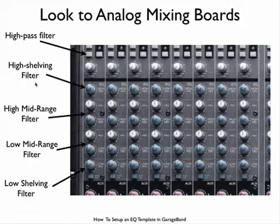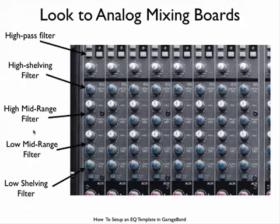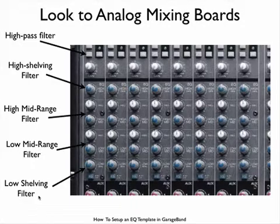Next, we have a high-shelving filter, which is used to control the brightness and helps guide the listener to a particular instrument in the mix. Then, we have two mid-range parametric filters. These, among other things, can be used to remove unwanted resonances. Finally, we have a low-shelving filter, which can be used to emphasize the bass and give warmth to a track.